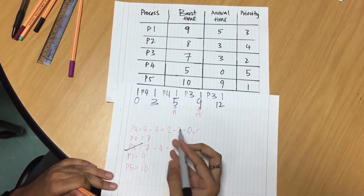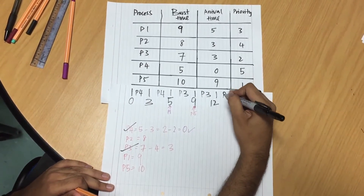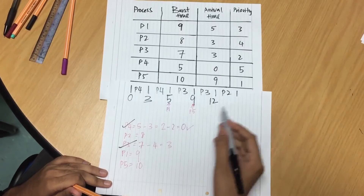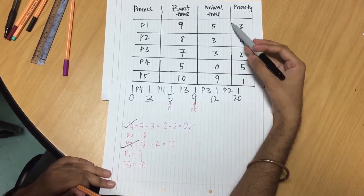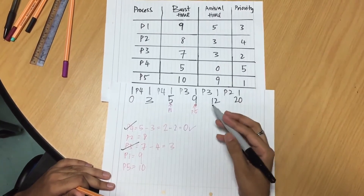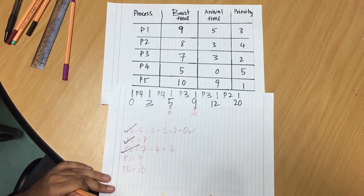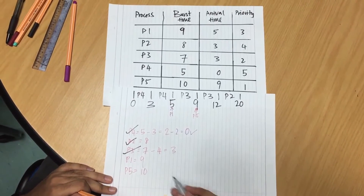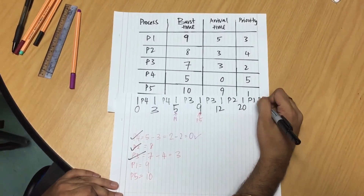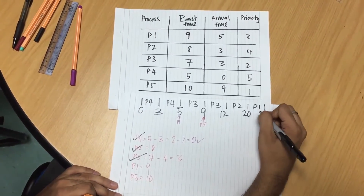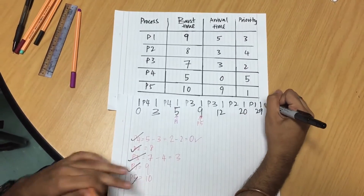Now we take the next shortest burst time, which is P2 with 8 milliseconds, completing at 20. There is no arrival between 12 and 20, so we proceed to P1, which has the shortest time compared to P5. P1 will be completed at 29 milliseconds, and then followed by P5 at 39 milliseconds.